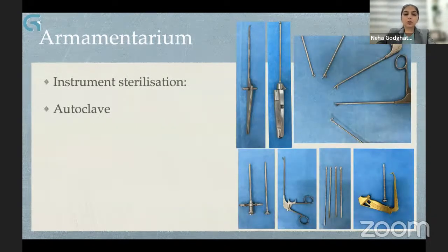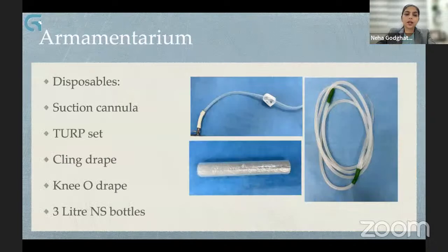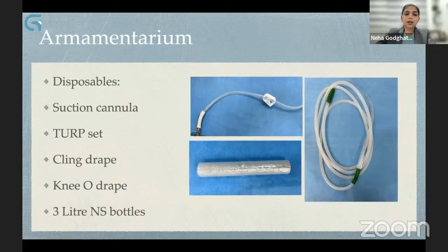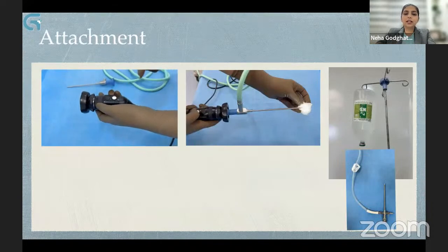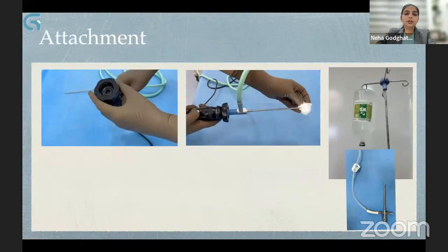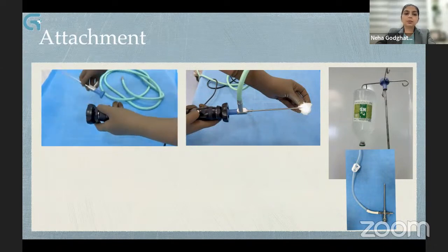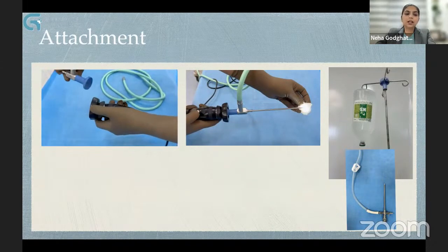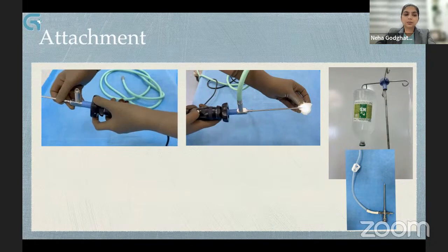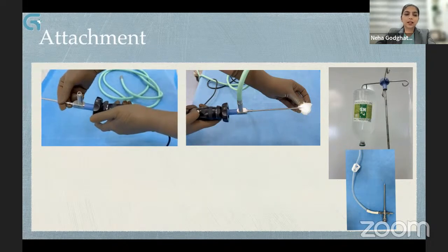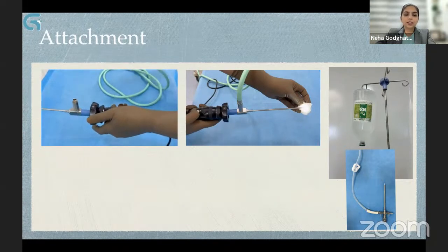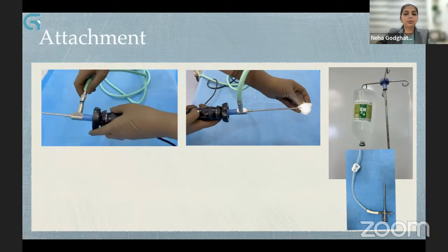Studies have shown that up to 5% of all pyogenic knee arthritis in adults are attributable to arthroscopy, so the most important step is sterilization of instruments. ETO and plasma sterilization is available in India, and optics are sterilized with this process. All metal instruments can be very well autoclaved. Sterile disposables like suction cannula, tubing, and drapes are available in the market.